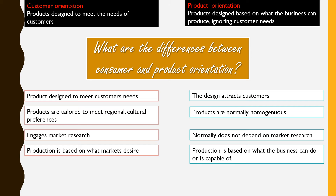In terms of product orientation, the company looks at its capabilities and resources without conducting market research. This could result in lower sales or demand because they may have a product they think is good, but there may not be a demand for it. So in both situations there are advantages, but it is also important that we understand what the limitations are.